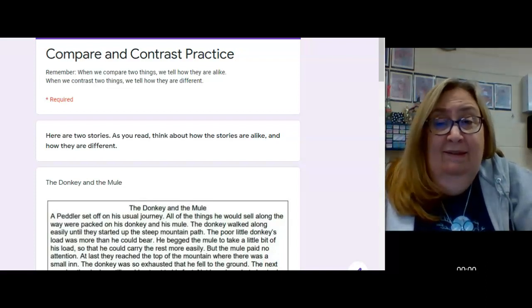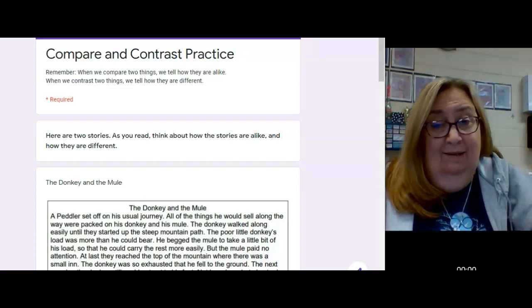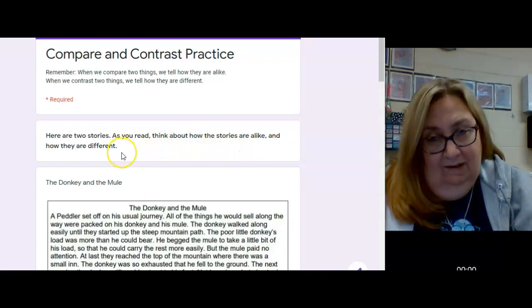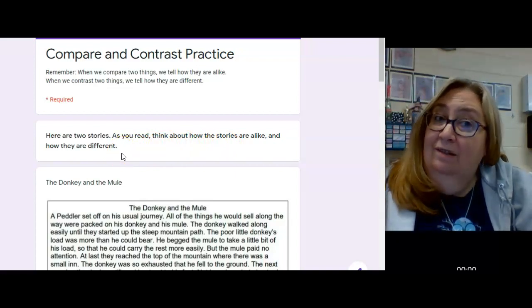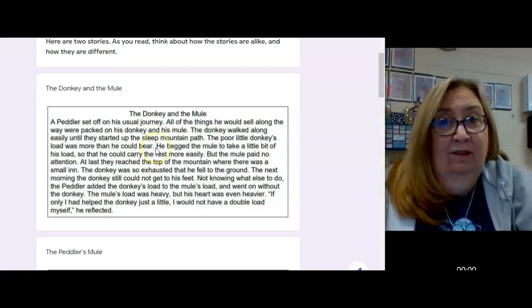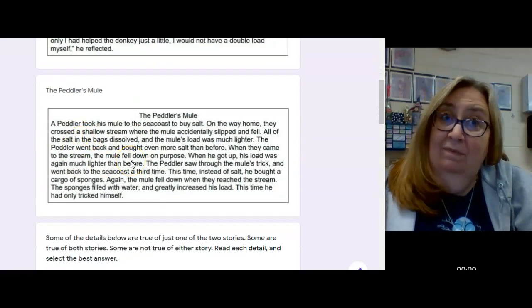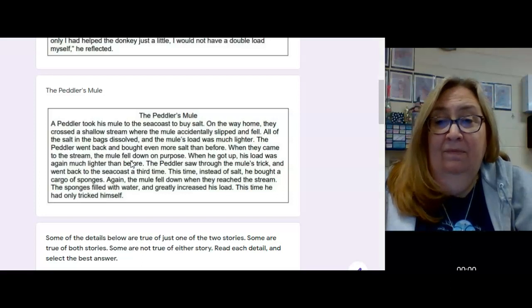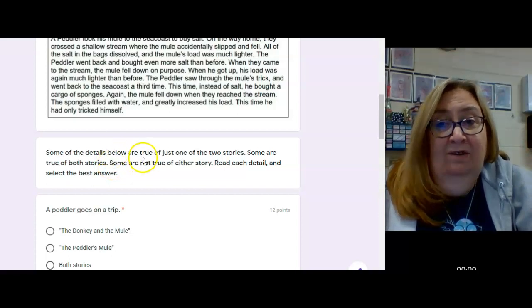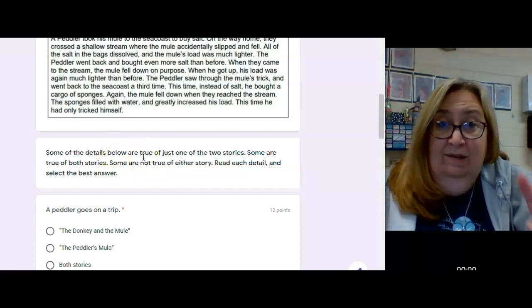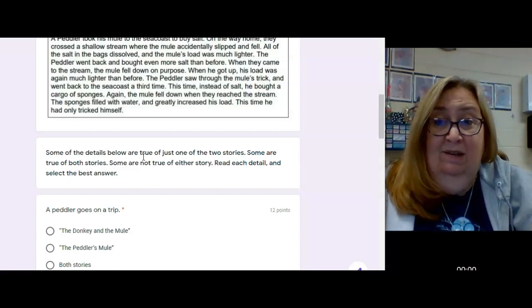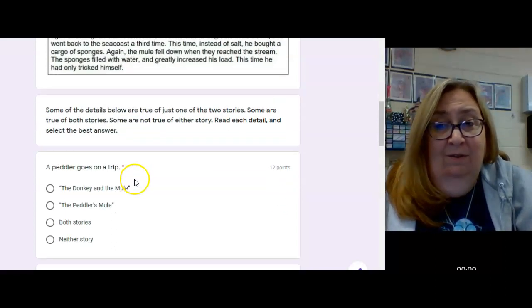Today, you're going to complete this activity called the Compare and Contrast Practice. I'm going to give you two stories. And, as you read the two stories, you need to think about how they're alike. Compare them. And, think about how they're different. Contrast them. So, your first story, they're super short, just paragraphs. The first one is the donkey and the mule. And, the second one is the peddler's mule. Already, you can find a way to compare them. And, I'm giving you some details as your questions today. Some of the details below are true in just one of the stories. And, some of them are true in both stories. And, some of the details aren't true in either one of the stories. You're going to read these details and decide.